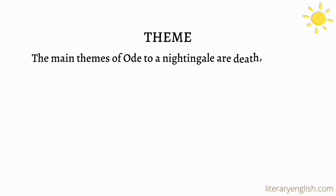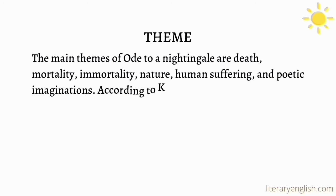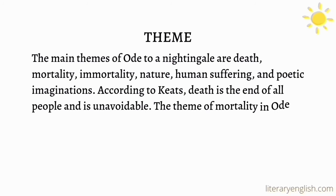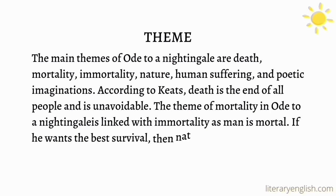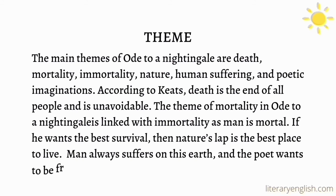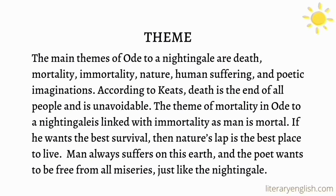Coming towards the themes of the poem, the main themes of 'Ode to a Nightingale' are death, mortality, immortality, nature, human suffering, and poetic imaginations. According to Keats, death is the end of all people and is unavoidable. The theme of mortality is linked with immortality, as man is mortal. If he wants the best survival, then nature's lap is the best place to live in. Man always suffers on this earth and the poet wants to be free from all the miseries, just like the nightingale.